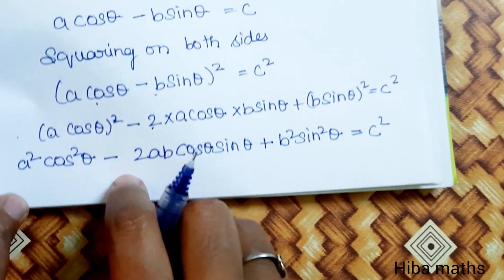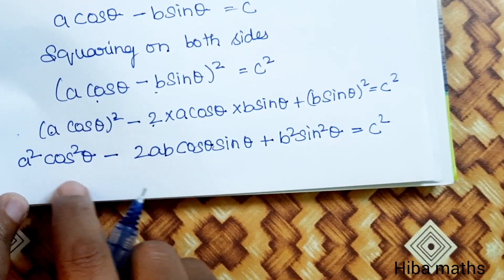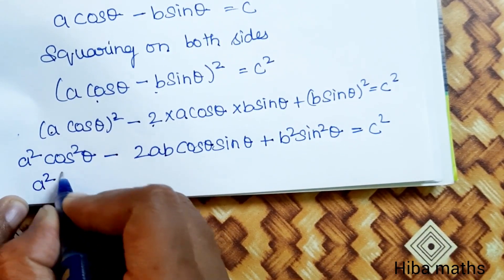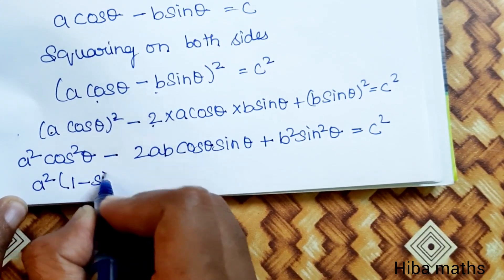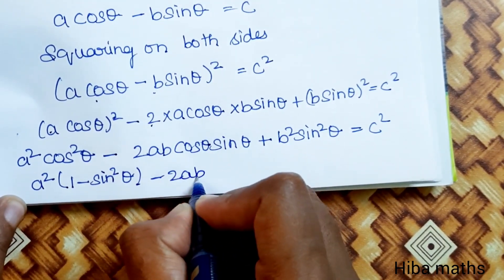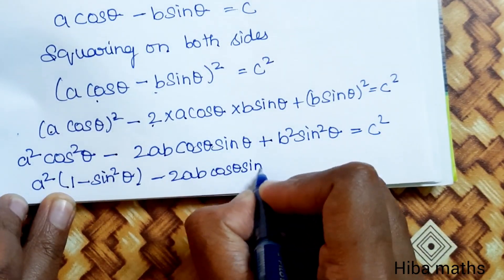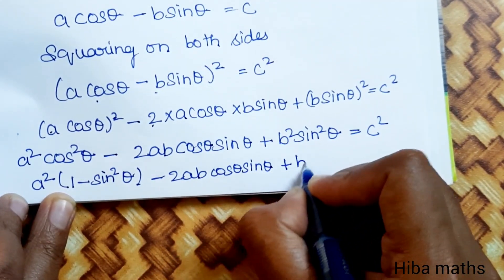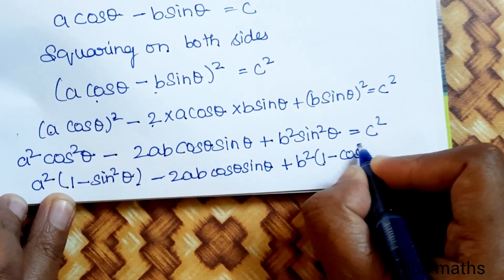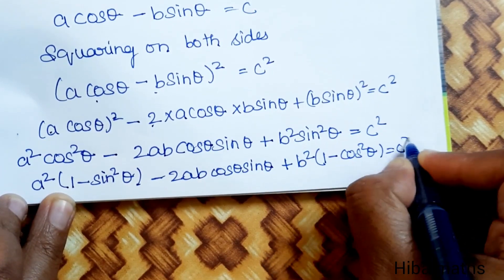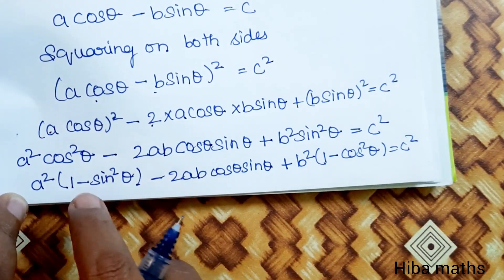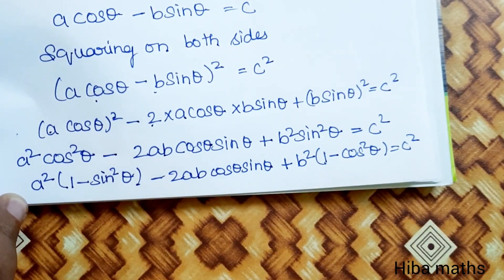Next line: using the identity cos squared theta equals 1 minus sin squared theta, we write a squared into 1 minus sin squared theta, minus 2ab sin theta, plus b squared sin squared theta — using identity 1 minus cos squared theta — is equal to c squared.